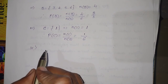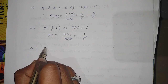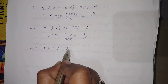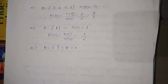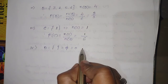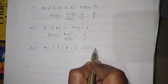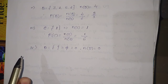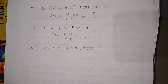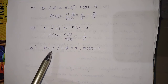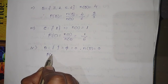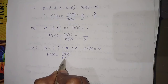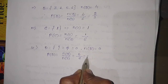Fourth question — a number more than 6 will appear: D = {} (empty set), so n(D) = 0, since no face on a die exceeds 6. P(D) = 0/6 = 0.